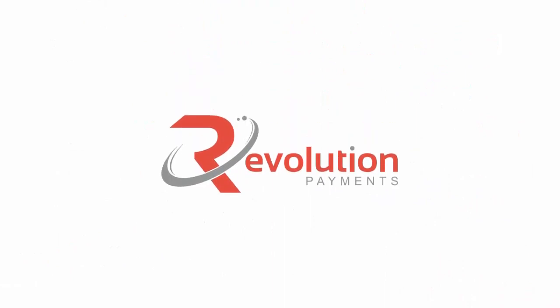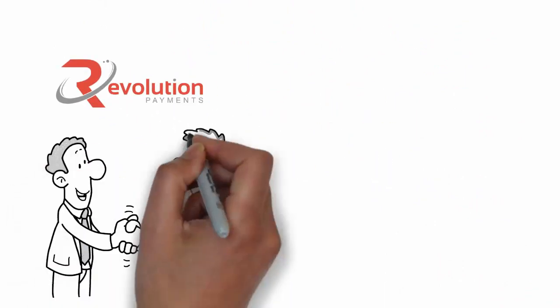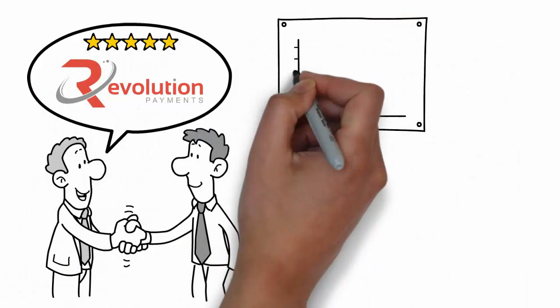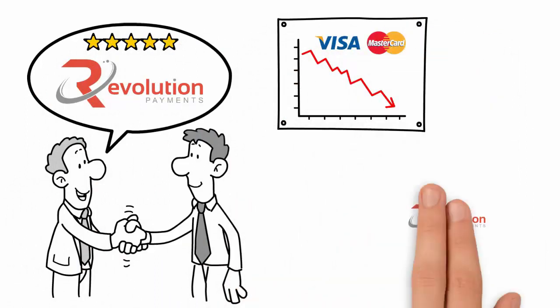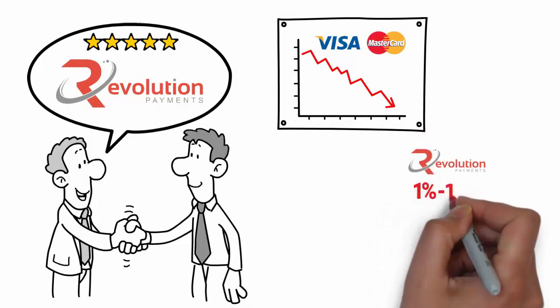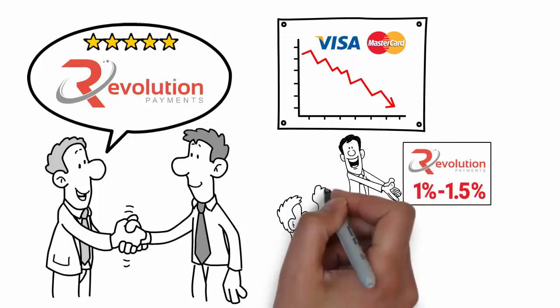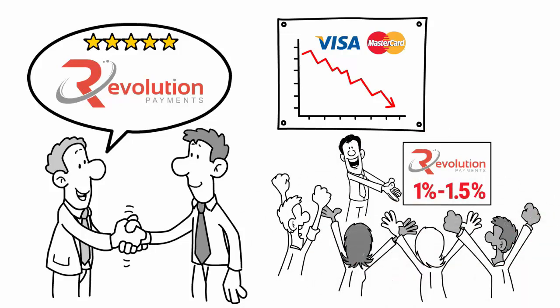Revolution Payments developed technology to help contractors meet the requirements for qualifying for the reduced Visa and MasterCard processing rates. This new revenue adds 1 to 1.5% to your bottom line without having to increase your sales volume.